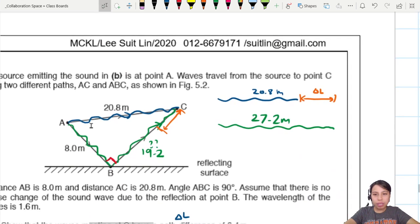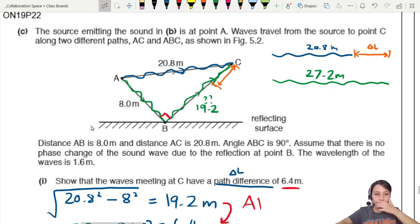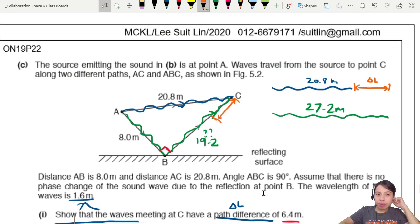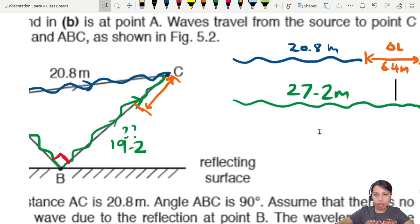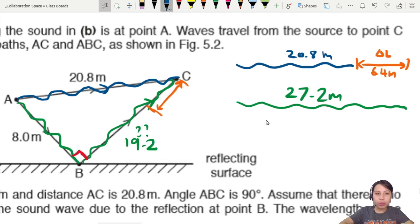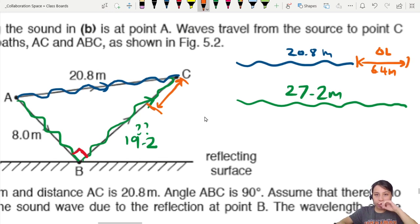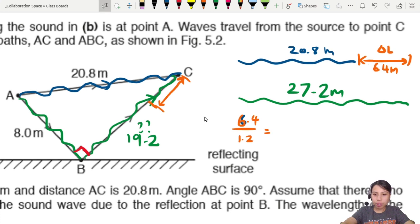We go back to our lambda. Lambda is 1.6. So we can find it. 1.6 is one wavelength. So this path difference is 6.4. Let's write that down here. 6.4 meters. How many wavelengths can fit inside 6.4? Let's do a simple division to check it out. So what do we do? You want to find in terms of wavelength, you have to take 6.4, divide by one wavelength, which is 1.6. And you will get 4 lambda.